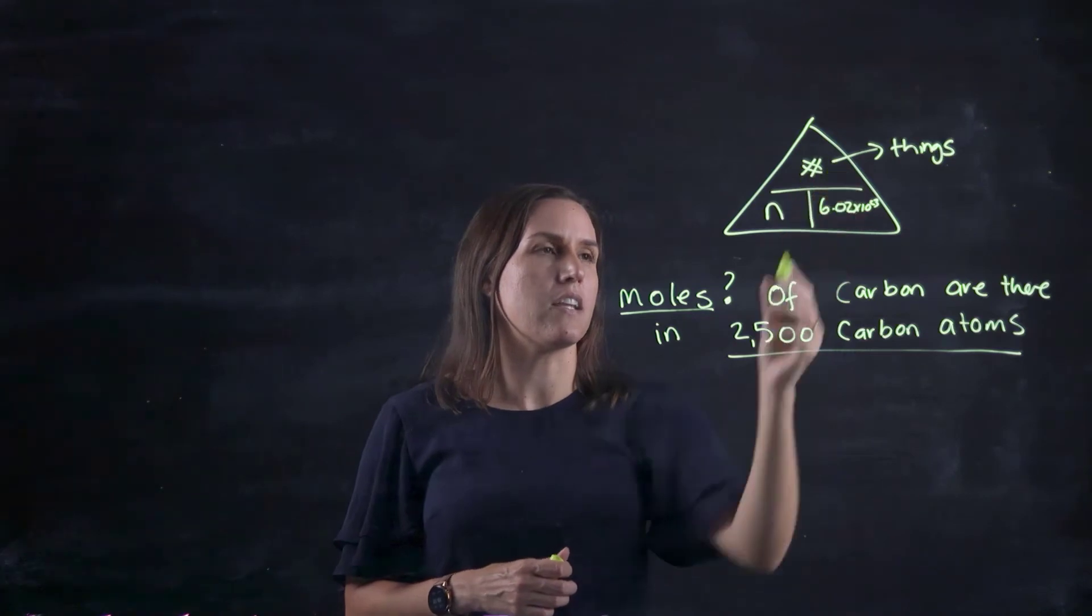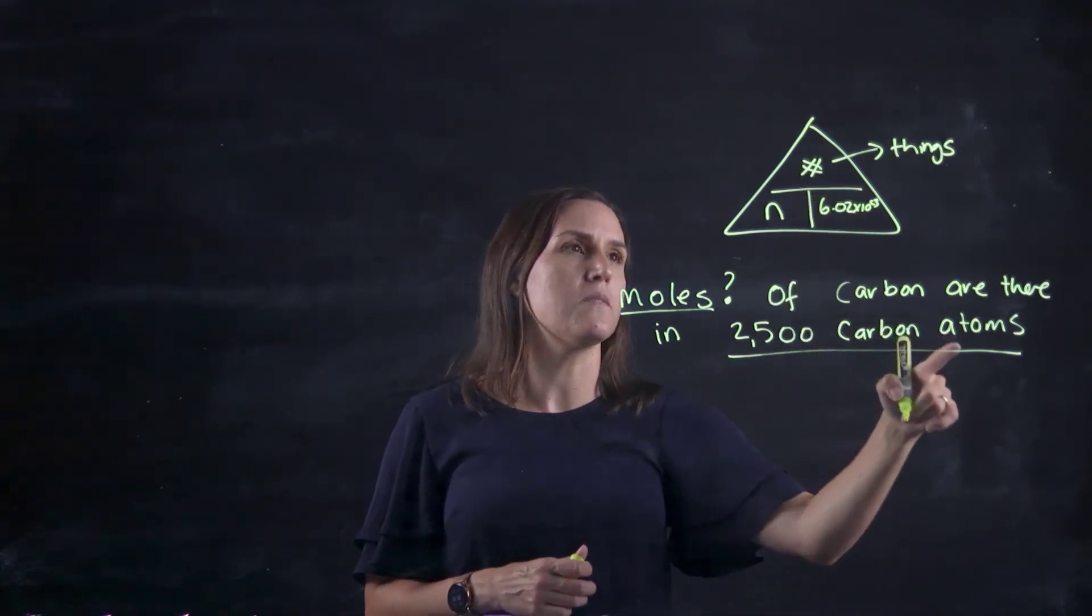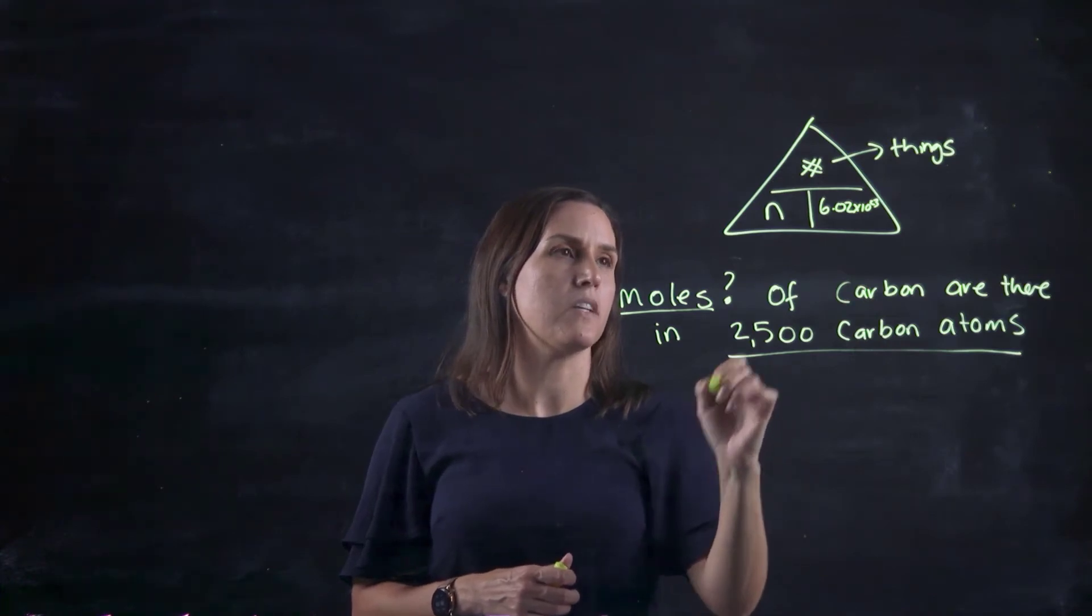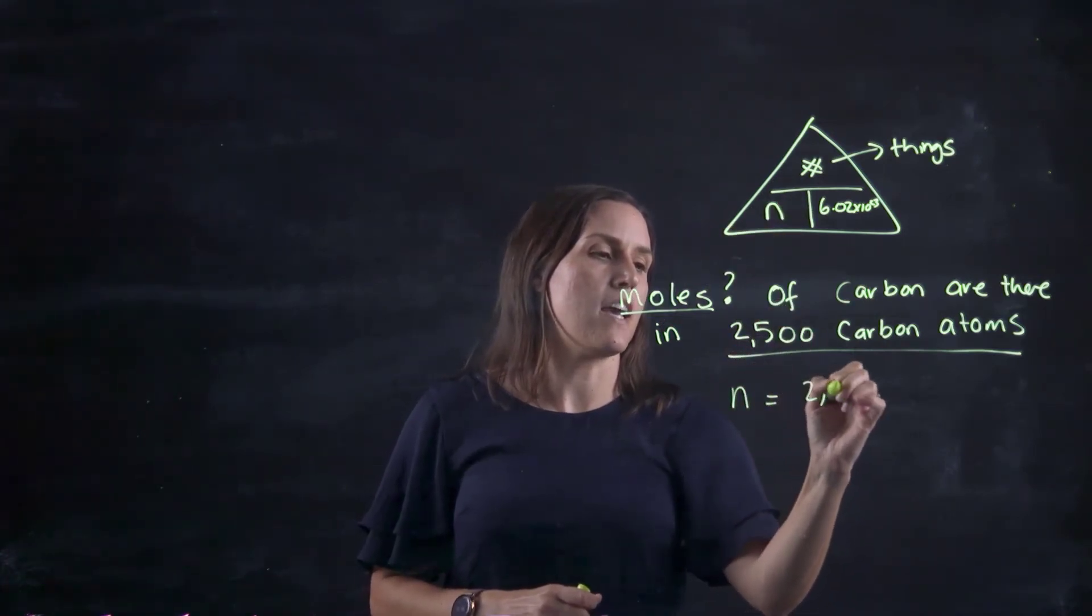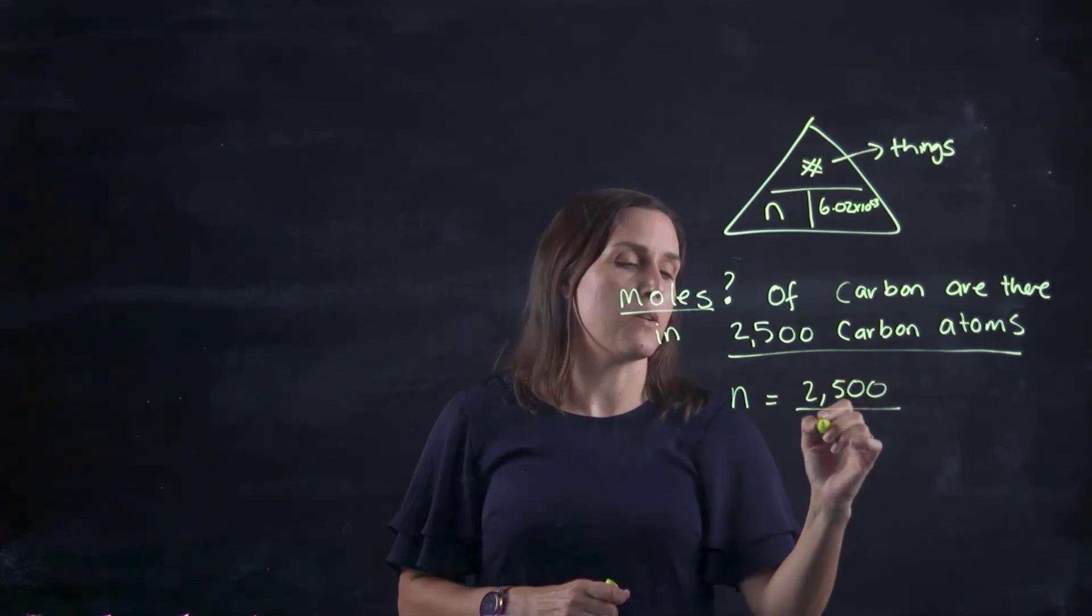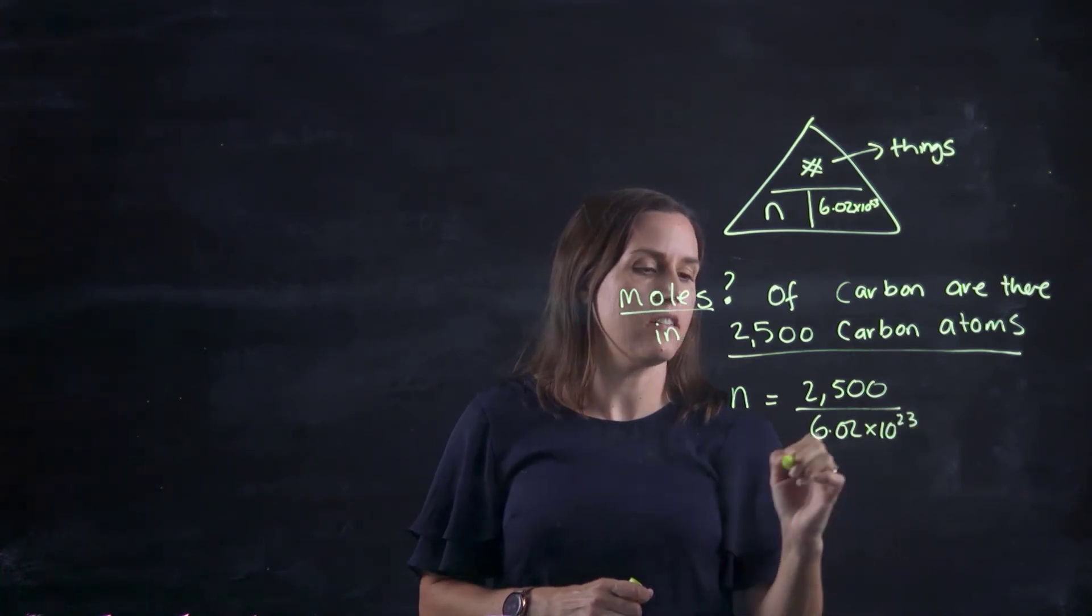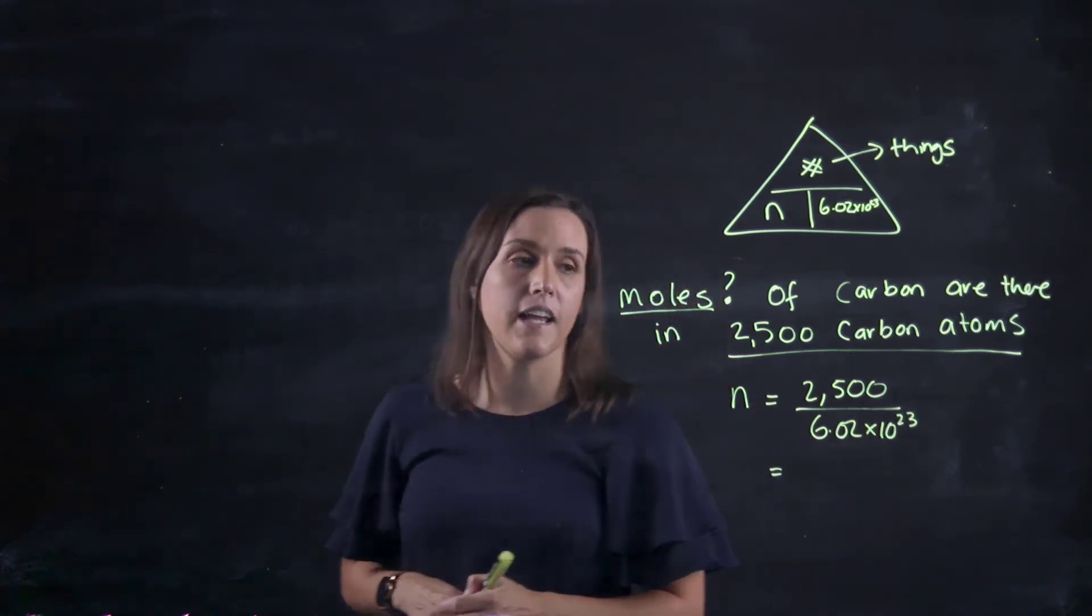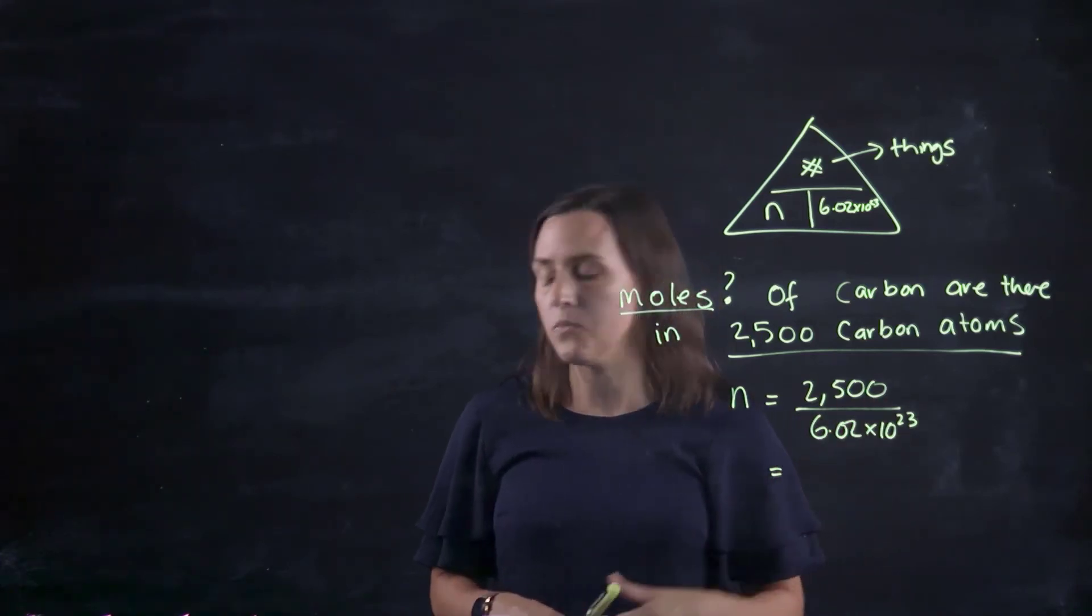I can relate them directly. The number of moles is the number of atoms divided by Avogadro's number. So 2500, which is going to be a very small number, divided by 6.02 times 10 to the 23. Pop that into your calculator. Remember to use brackets to separate the top and the bottom when you're dividing.